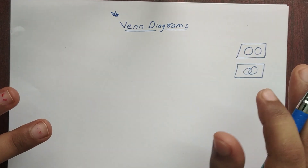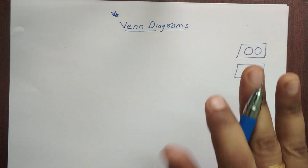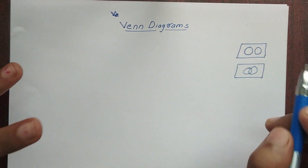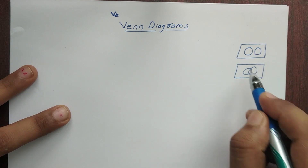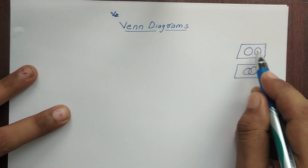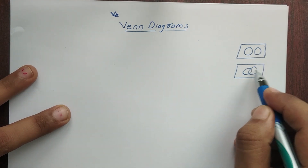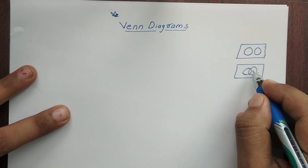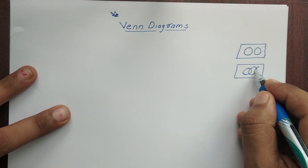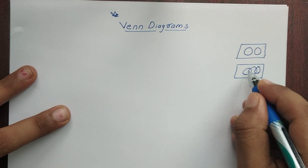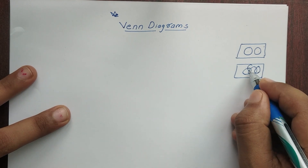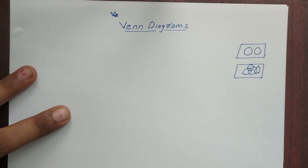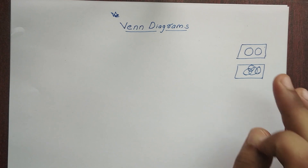So, what is a Venn Diagram? If you have a rectangle, then it will have a circle. It can be a separate item or it will overlap. If you have two circles, they can overlap.